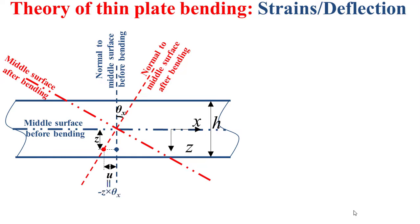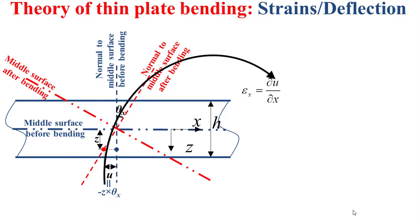As theta x is considered small, u will be equal to minus z multiplied by theta x. The strain along x, denoted by epsilon x, is the variation of the x component of the displacement u along the x direction, as explained in a previous video. Injecting u = -z·theta_x, we obtain the strain along x equal to minus z multiplied by the second derivative of the deflection along x, where z is the distance from the considered point to the middle surface of the plate.